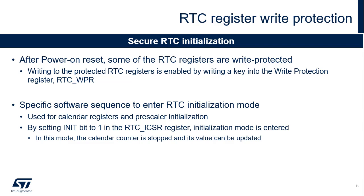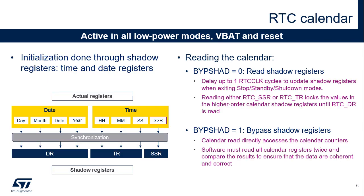The RTC is initialized using a safe method. The RTC registers are write-protected to avoid any possible parasitic write accesses, and a specific sequence must be written in the RTC write-protection register. Initialization mode must be entered in order to change the clock prescaler values or the calendar values. The RTC calendar keeps running in sleep and stop low-power modes and during reset. Initialization of the time and date registers is performed via their shadow registers, which belong to the APB clock domain. The sub-second register cannot be initialized.